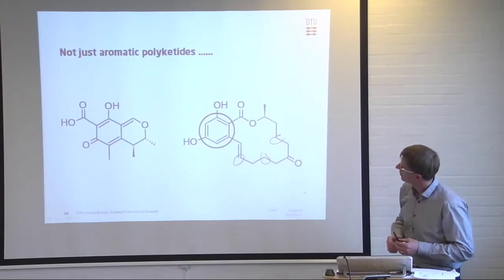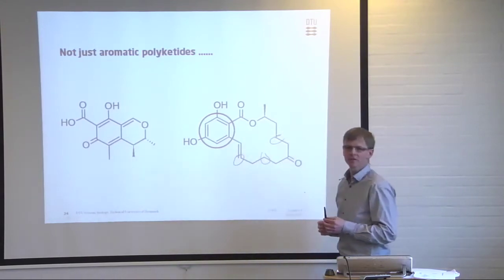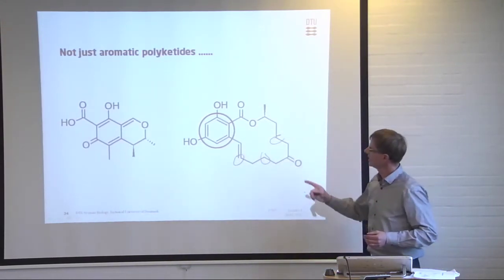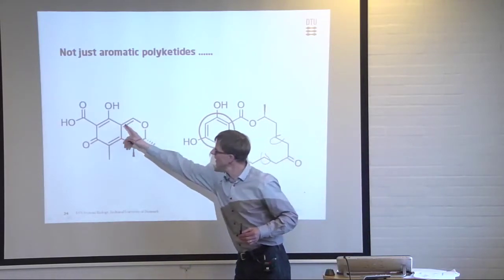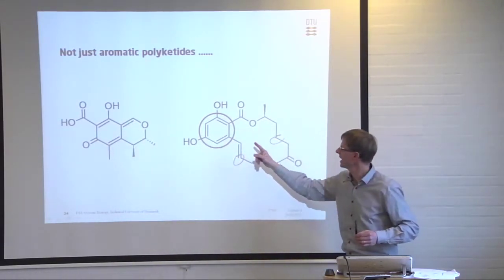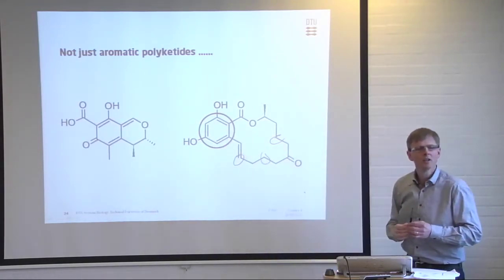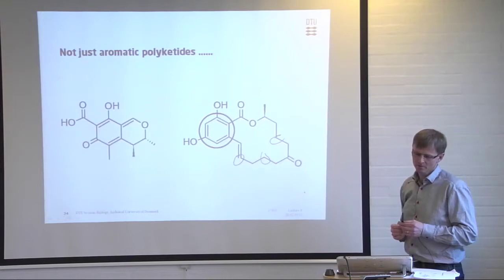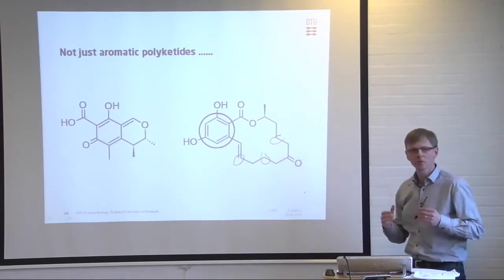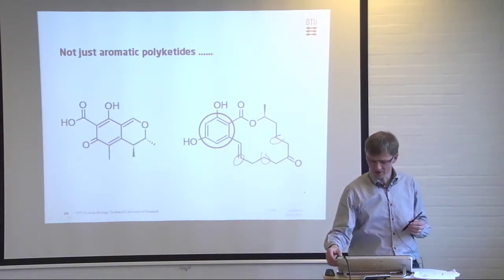This is an example - this is citronil, a mycotoxin that a lot of fungi produce. You can see in this case it's not an ordinary aromatic ring. Something has happened to this molecule, and hopefully the following presentation will illustrate how this is taking place.